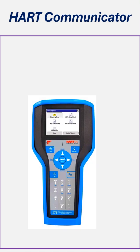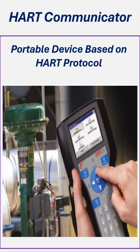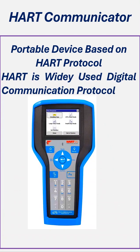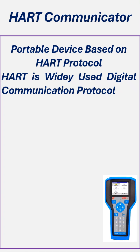A HART communicator is a portable device used for communication with field devices that are based on the HART protocol. The HART protocol is a widely used digital communication standard in industrial process control systems, enabling two-way communication between smart field devices and control systems.